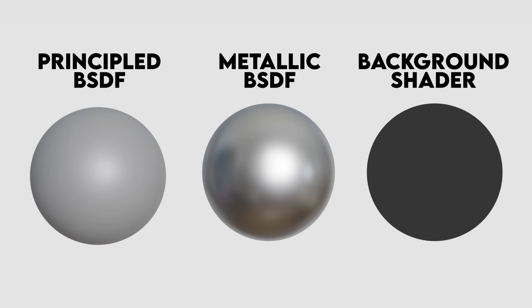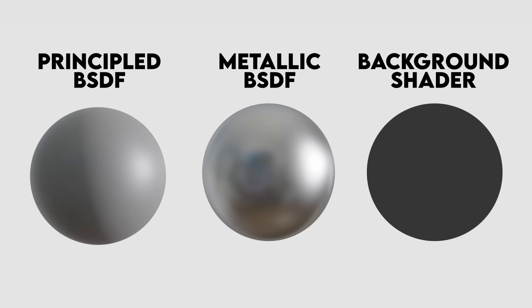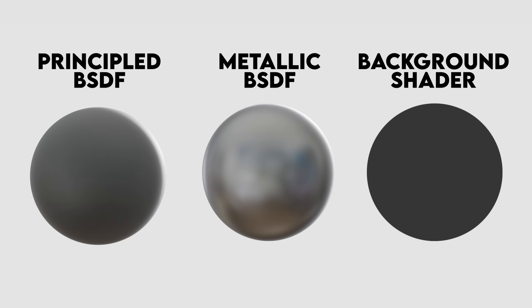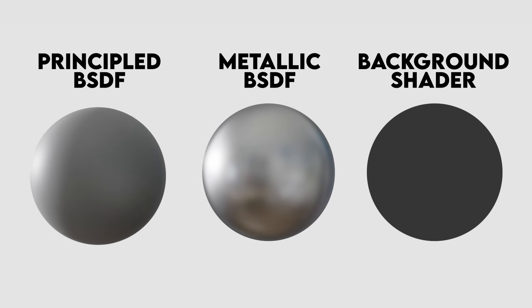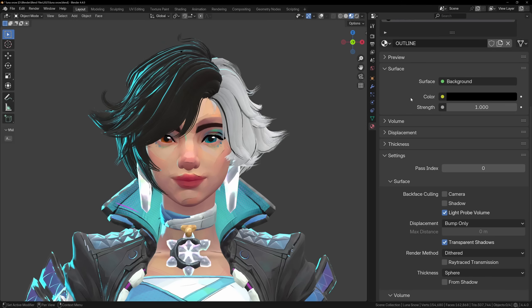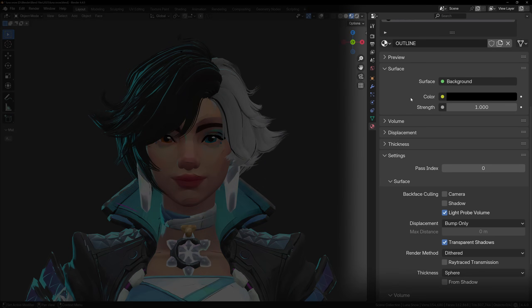The Background shader is just a flat color, so it won't be affected by lights in your scene. The most important thing here is to enable Backface Culling for the camera under the surface options.